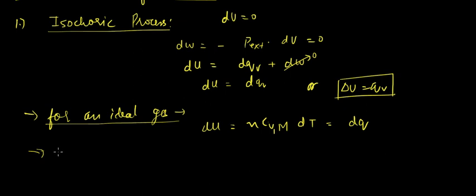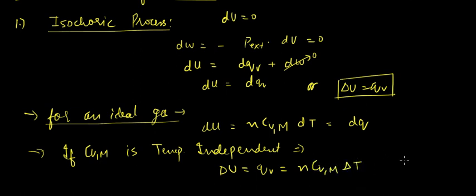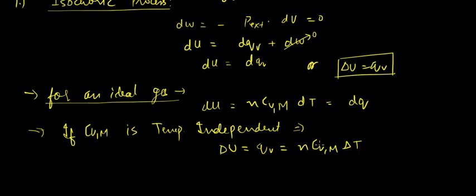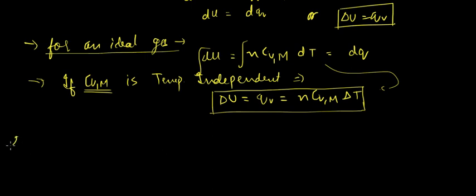If C_Vm is temperature independent, we can write that ΔU equals Q_V, which equals nC_Vm ΔT. We integrate the above equation, and since C_Vm is temperature independent, the result is ΔU equals nC_Vm ΔT. Next, let us see the calculation of work done for the isobaric process.